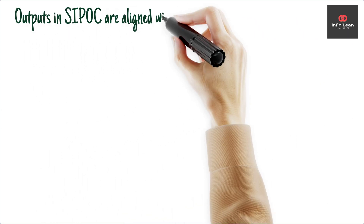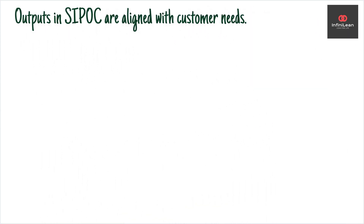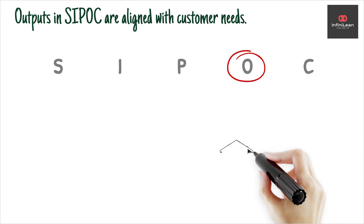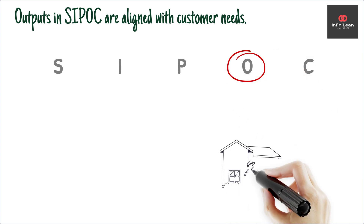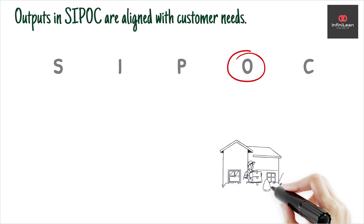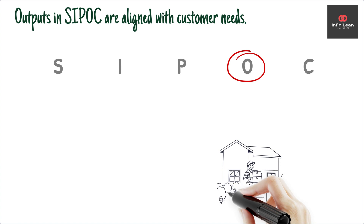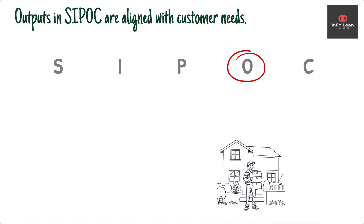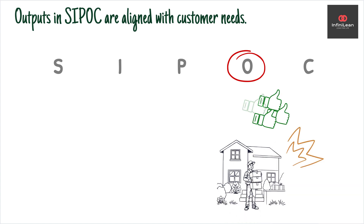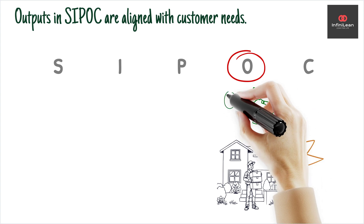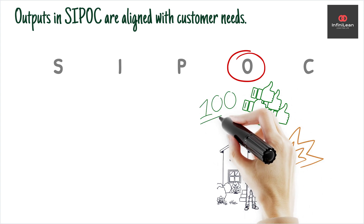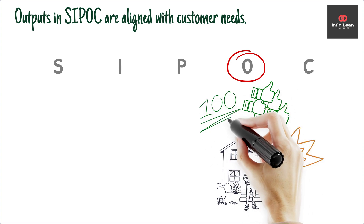Once you define the inputs, let's move to outputs. These are the products or services that result from the process. Measuring outputs against customer needs and expectations is vital for any improvement project. The goal is to ensure what comes out of the process accurately aligns with what customers want.